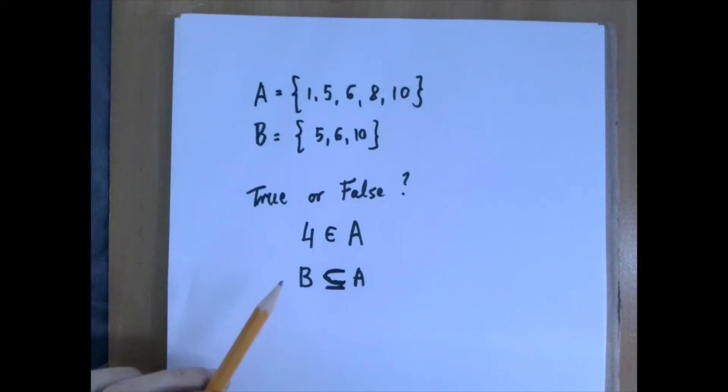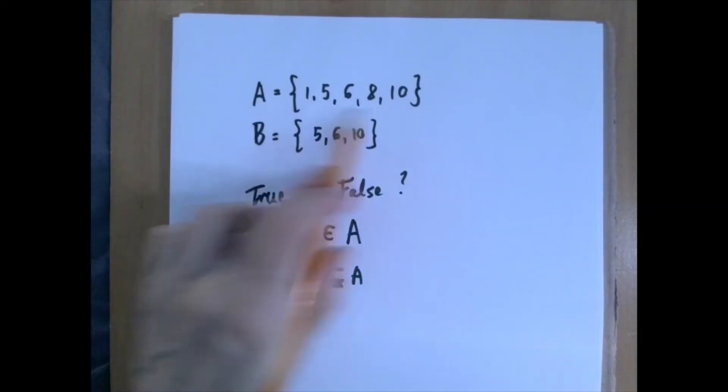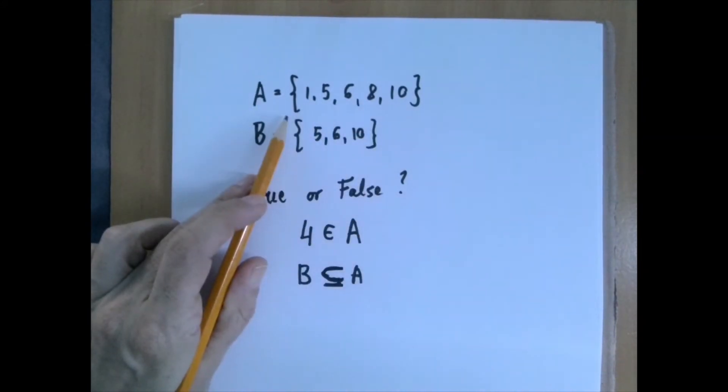The first statement reads: 4 is an element of A. That means when we look at the elements listed, 4 should be among them. When we look, 4 is not there. So 4 is not an element of A,